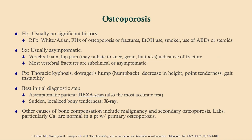Most patients will come in with signs consistent with a fracture, in which case we get an x-ray. When imaging a suspected fracture, visualize the joint above and the joint below. For example, for a suspected distal radius fracture, get radiographs of the forearm, wrist and hand, and also the humerus, since injury to one area may mean injuries elsewhere.